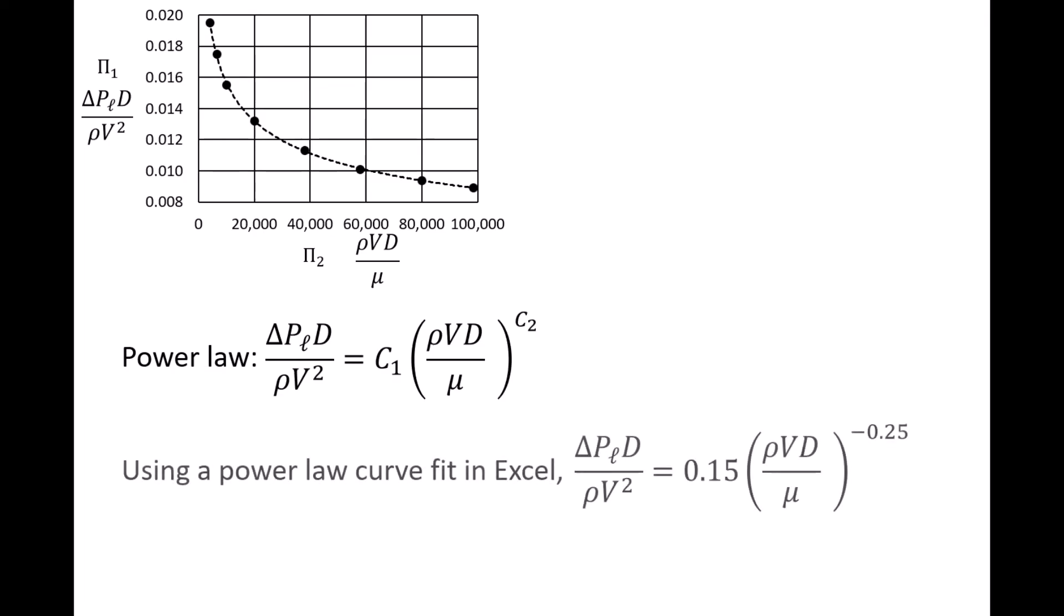In Excel, a power-law curve fit to the data gives that c1 is 0.15 and c2 is negative 0.25. We can visually see that the data points fall along the power-law curve very well, which suggests we have not omitted any important variables in our analysis.